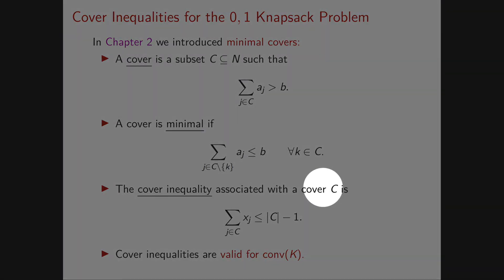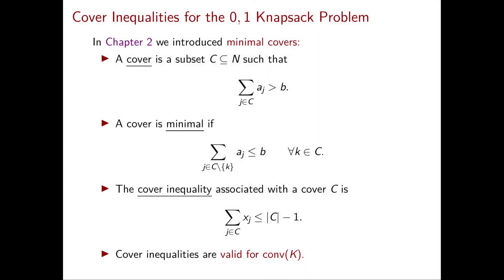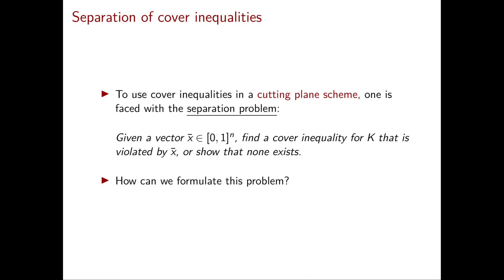For any cover C, we can write the corresponding cover inequality: the sum of all the xⱼ for j in C is at most cardinality of C minus 1. Cover inequalities are valid for the convex hull of K.